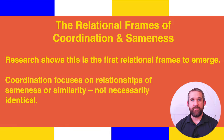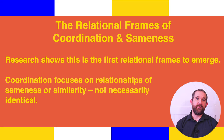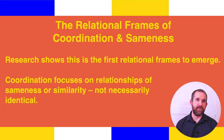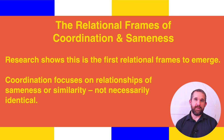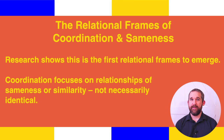We begin with the relational frames of coordination and sameness, because research shows this is one of the first relational frames to emerge. Coordination focuses on relationships of sameness or similarity — not necessarily identical — and focuses on differences or dissimilarities when things are not matches. This frame helps us have a sense of coherency to events, especially when communicating. A lot of early language is naming: this is a road, this is a tree, this is a cup, so that we are all talking about the same thing and coordinating ourselves to those same things.